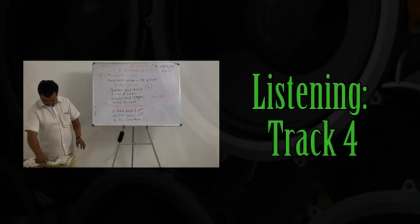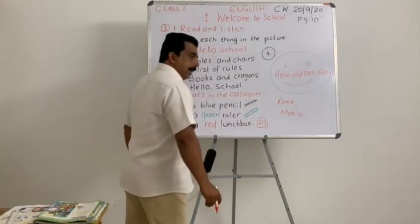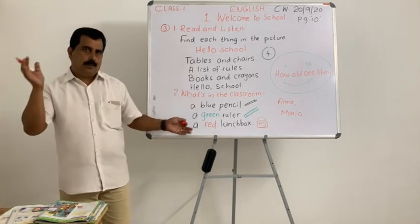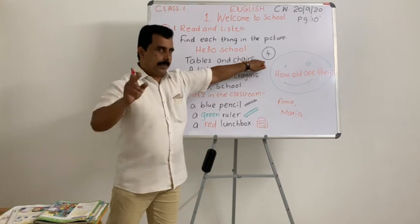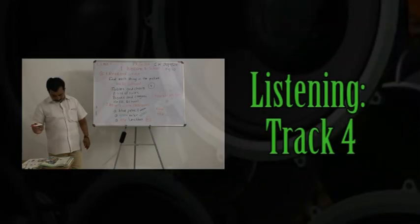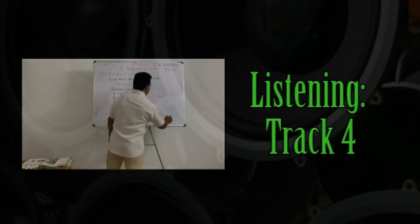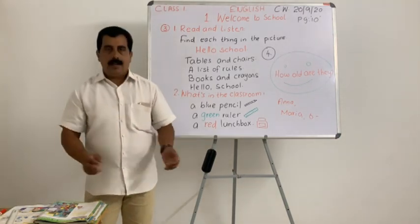Track 4: 'Hi, I'm Anna. What's your name? My name is Maria. How old are you? I'm six. Me too! I like your lunch box. Thank you.' That was very fast — girls talk quickly. So we'll listen one more time. I'll ask some questions after. Ready? One, two, three.